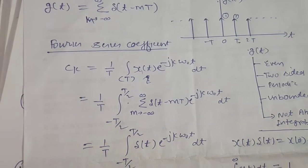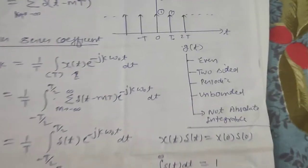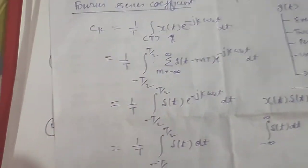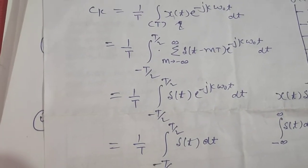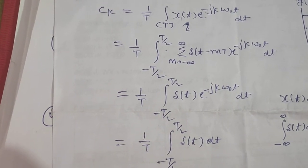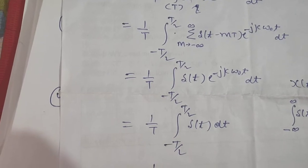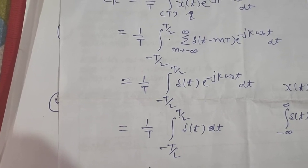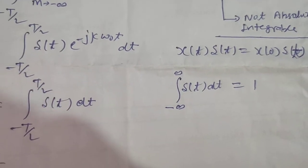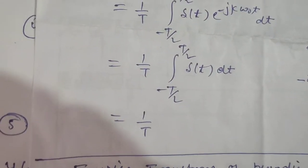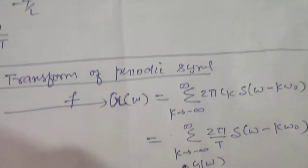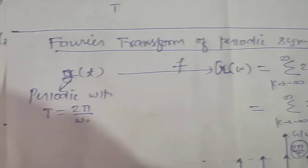So I have written δ(t) times e raised to minus j·k·ω₀·t dt. Using the property that x(t)·δ(t) equals x(0)·δ(t), I am putting t equal to 0 in the exponential, which becomes 1. So the integral becomes 1 over T times the integral from minus T/2 to T/2 of δ(t) dt. The area of the impulse in this period is 1, so c_k equals 1 over T. Substituting into the Fourier transform formula, G(ω) equals the summation of (2π/T)·δ(ω minus k·ω₀). This is the Fourier transform of our impulse train.